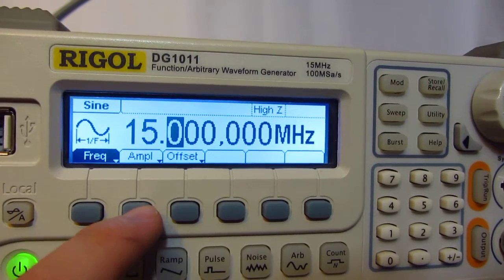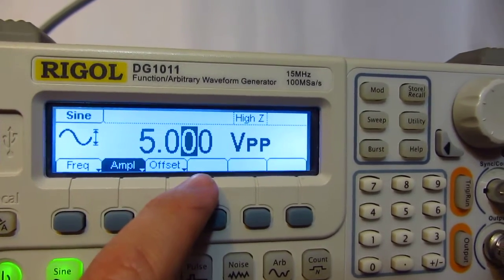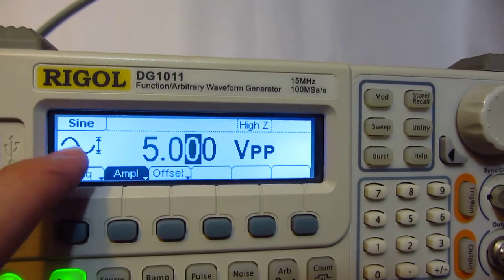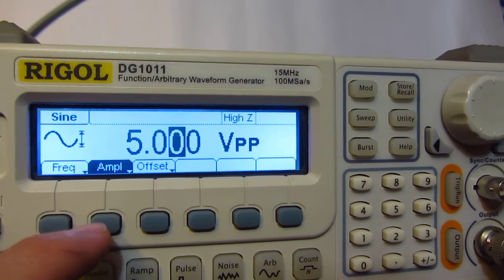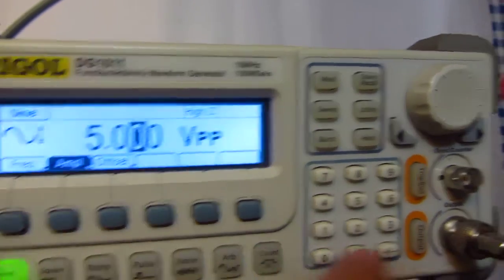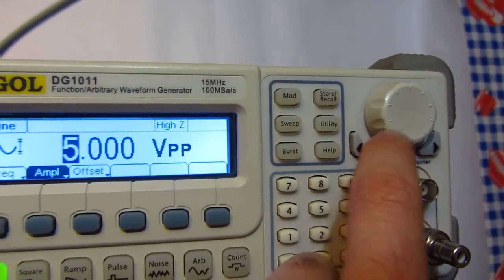Okay, amplitude—that's five volts peak to peak, from the bottom to the top of the sine wave. That goes up to 20 volts.